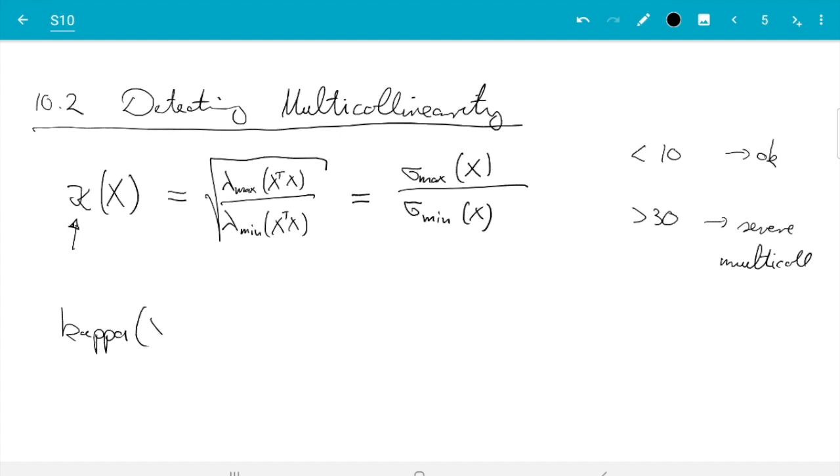You have two choices: you can either write kappa of X, or if you have already fitted the linear model then you can also write kappa of m and it will give you the same result. There is one small subtlety: by default that uses some approximate method, and to get the actual condition number you need to write exact equals true. Apparently the exact method is slower, but I have never run into trouble where that took too long, so I would recommend just using it with exact equals true.